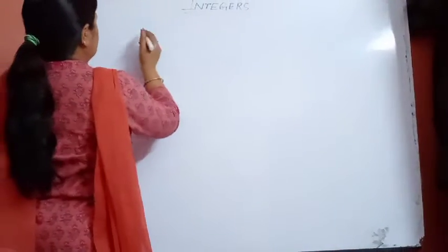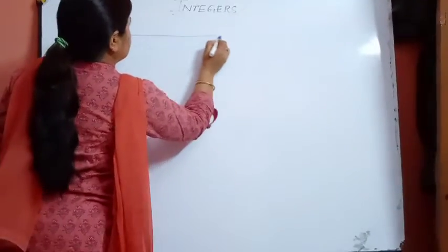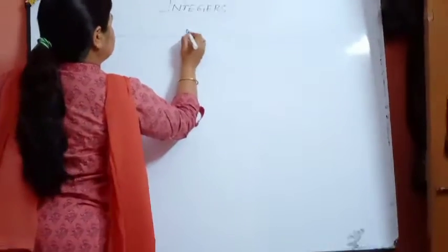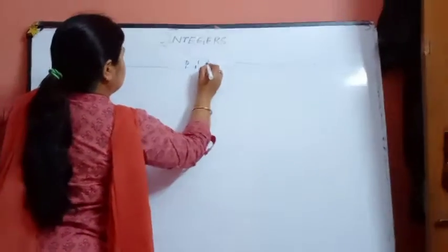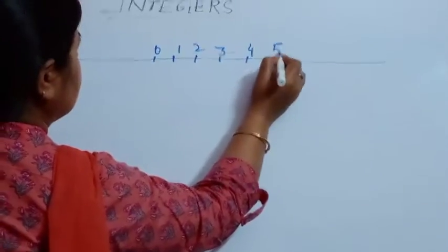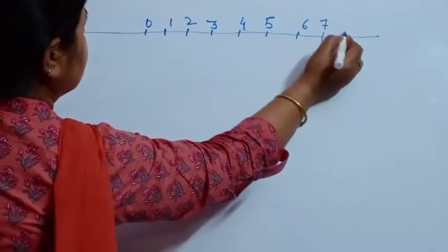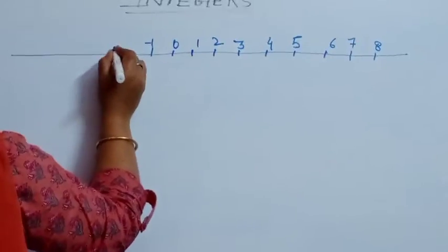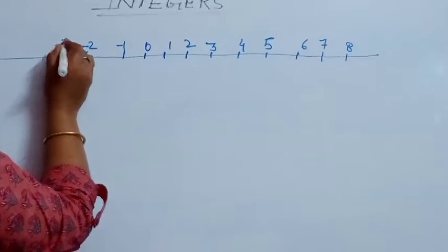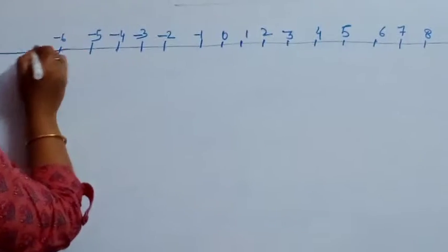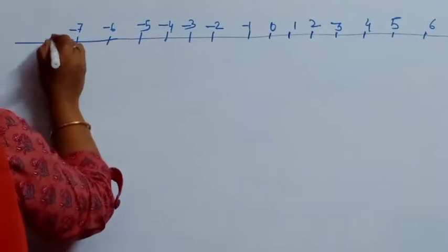I am making a number line which represents integers. I am marking 0, 1, 2, 3, 4, 5, 6, 7, 8 on the right side, and minus 1, minus 2, minus 3, minus 4, minus 5, minus 6, minus 7, minus 8 on the left side.